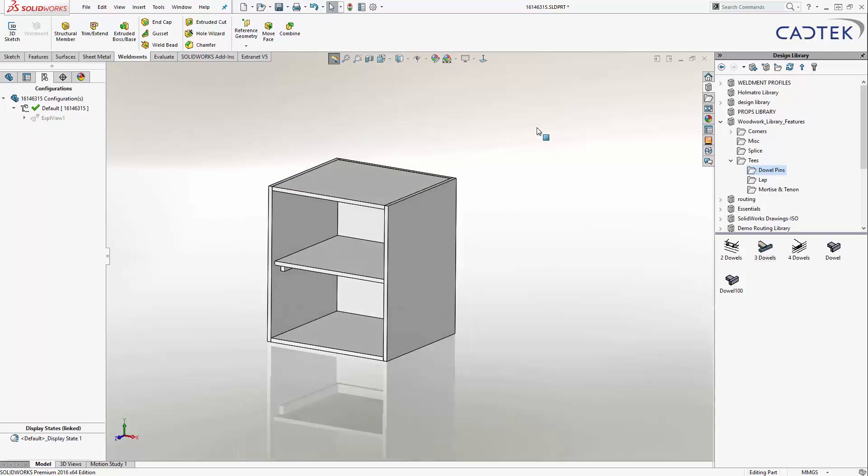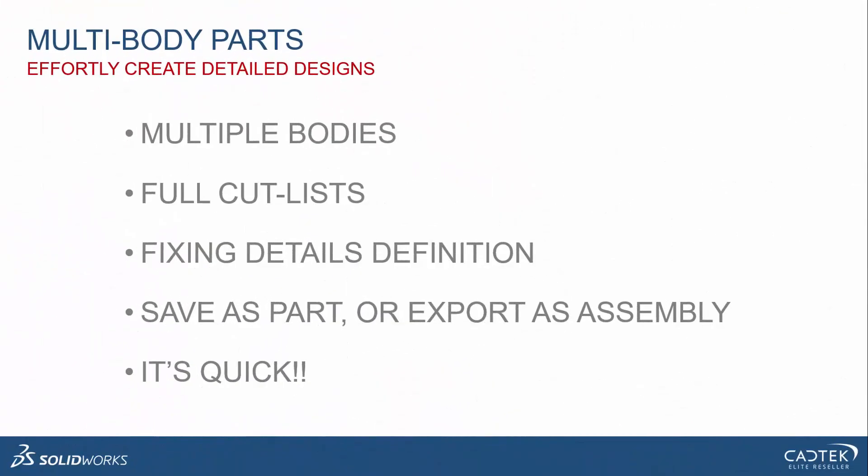So we've had a look at how to create multiple body parts — it's a way of being able to create full cut lists, which we're going to put onto the technical drawing. We can define things like fixing details — box, dovetail, biscuit, any of those kind of joints — and we can do things like dowels as I showed. We can save it as a part or export it out as an assembly, but fundamentally it's quick — a lot quicker than doing these in assemblies — and you can always turn it into an assembly afterwards.